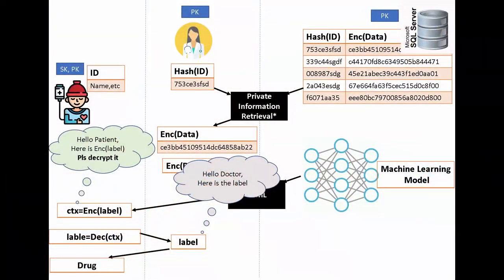For things like PIR and PSI, you need exact matches, so probably BFV or BGV would be needed. The PIR has a star notation — it's PIR extended to keyword PIR, meaning it's a combination of PSI and PIR. Standard PIR takes an index and returns a record, but here the input is a keyword rather than an index. So it's a variant of SealPIR. The process is: first do PSI with the hash ID to get the index, then do PIR to retrieve the value.